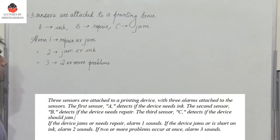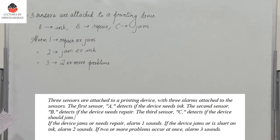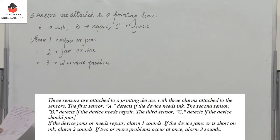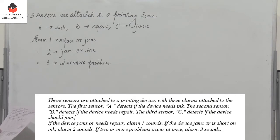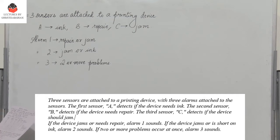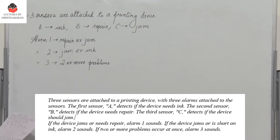There are three sensors attached to a printing device with three alarms attached to the sensors. The first sensor A detects if it needs ink, the second sensor B detects if the device needs repair, and the third sensor C detects if the device should jam. If the device needs repair or jam, alarm 1 is sounded. If the device needs to jam or a shot of ink, alarm 2 is sounded. For two or more problems, alarm 3 is sounded.